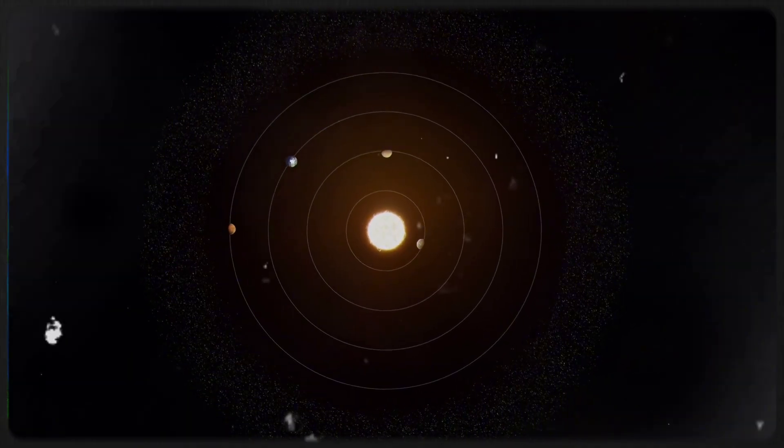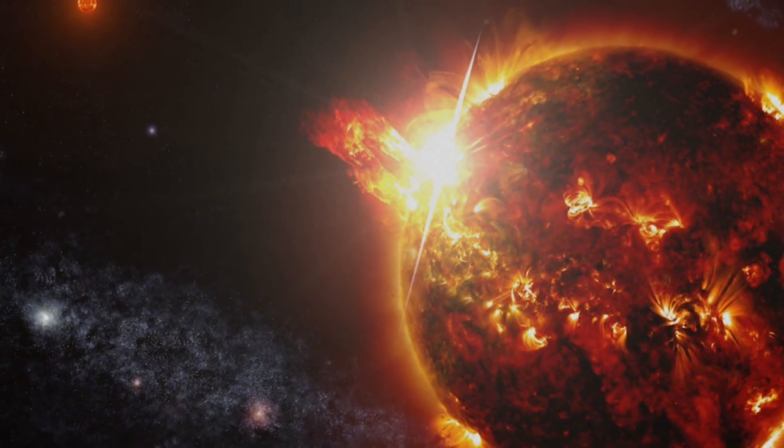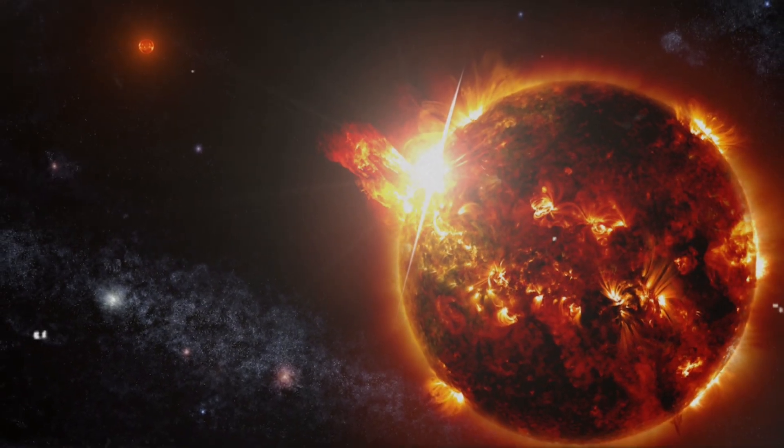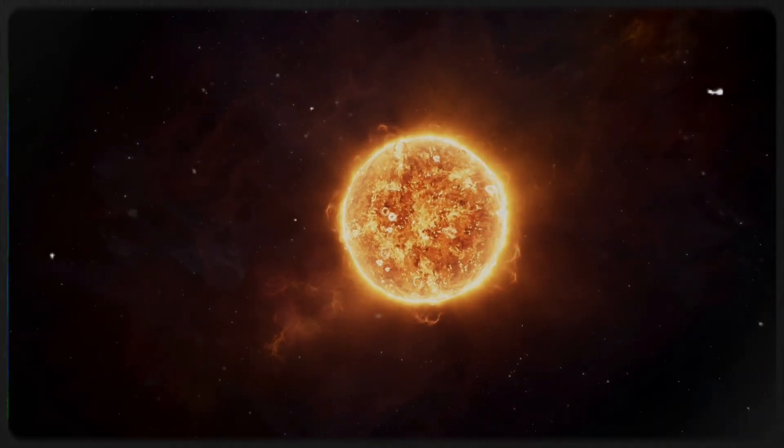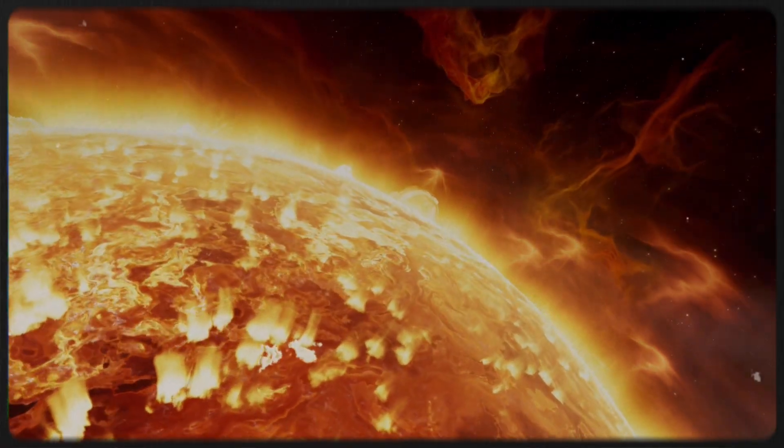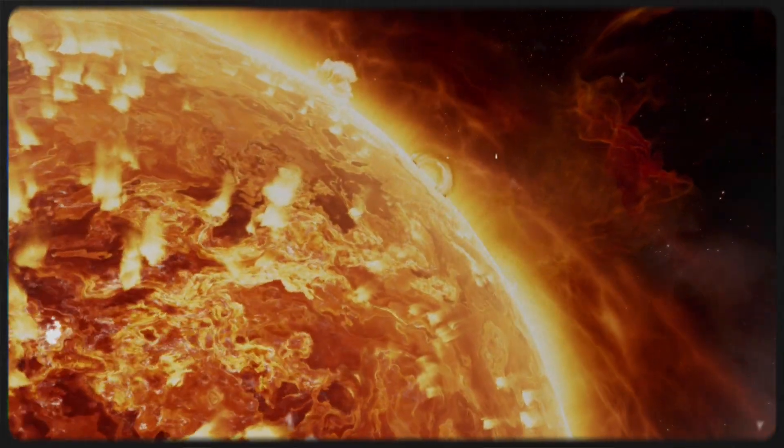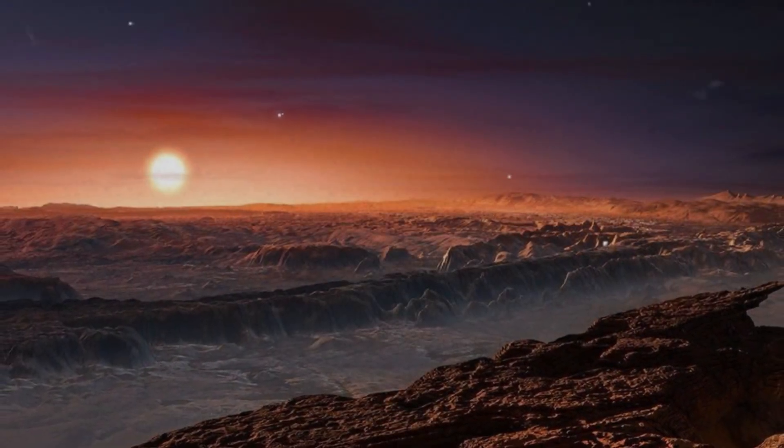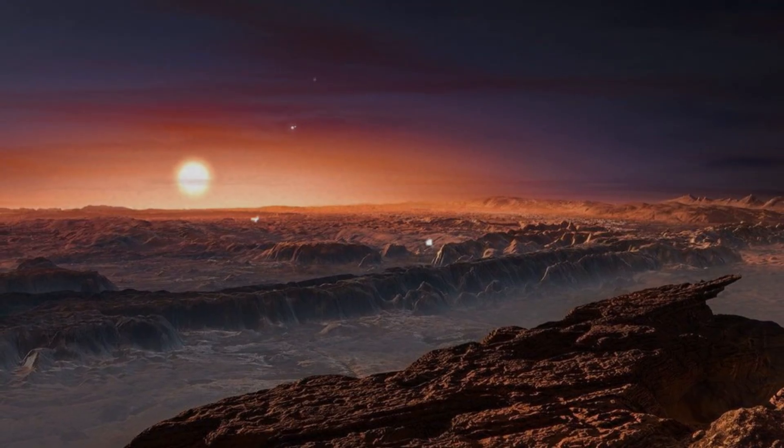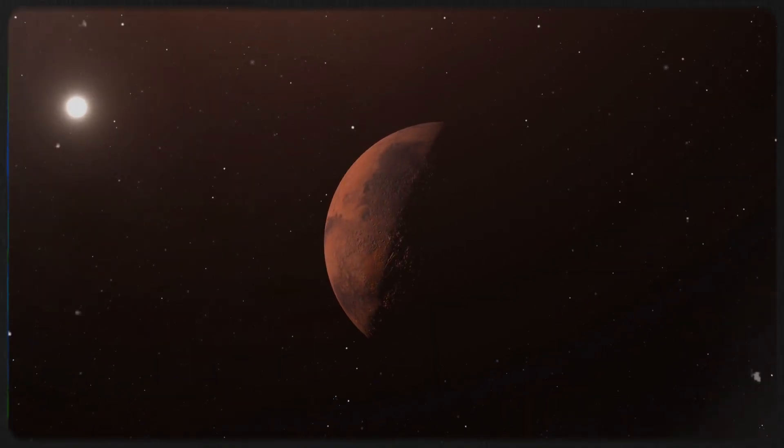However, the challenges don't end there. Proxima Centauri itself presents a major obstacle to habitability. JWST observations reveal that this red dwarf is far more volatile than previously believed. Its intense magnetic fields generate powerful solar flares that frequently bombard Proxima b with high-energy radiation. One particularly massive flare, detected in April 2021, was 100 times more powerful than any recorded from our sun. Such bursts could strip away the planet's atmosphere, exposing its surface to the harsh vacuum of space. Some scientists argue that Proxima b's close orbit makes it unlikely to support life as we know it. Others propose that life may have found a way to adapt. Could organisms exist that thrive in its harsh, unpredictable environment? Or is the planet destined to remain a barren, lifeless rock?